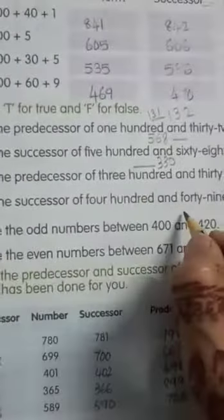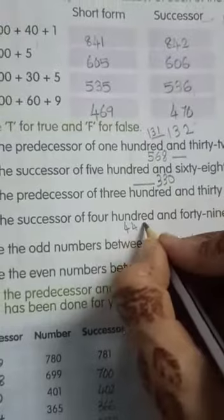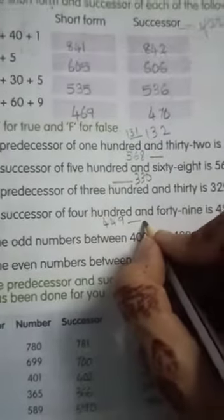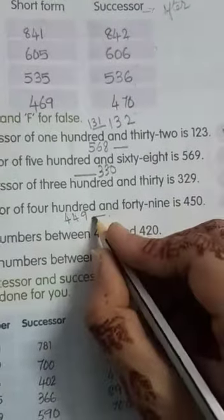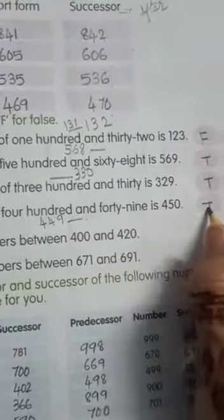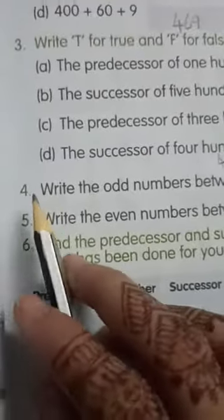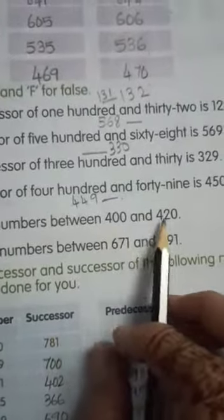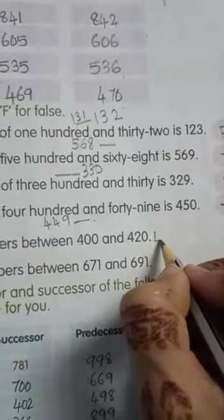The successor of 449: the successor is nothing but the after number, so what comes after 449? 450. So it is also True. Next, the fourth question: write the odd numbers between 400 and 420. Children, odd numbers end with 1, 3, 5, 7, 9.